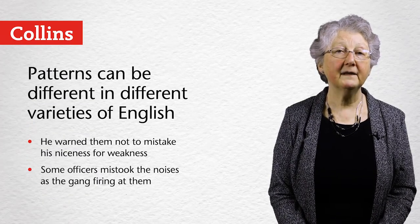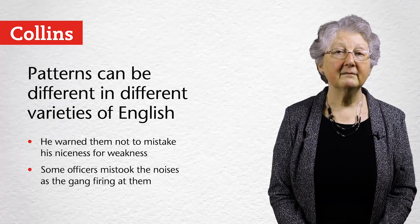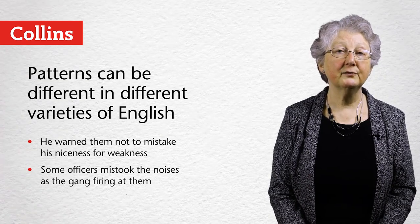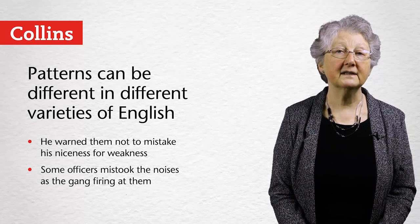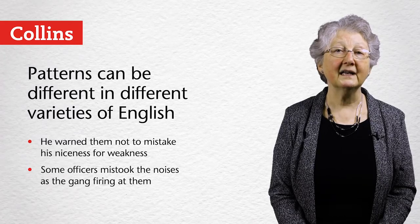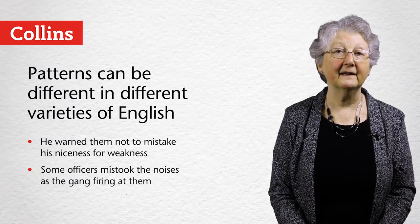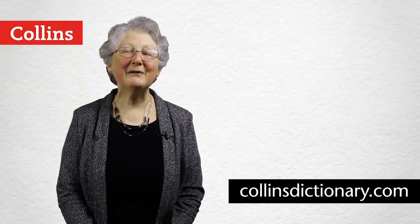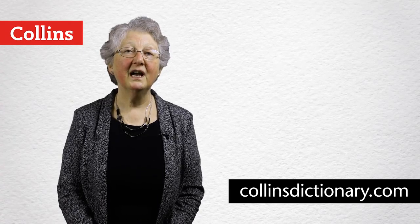We do find that patterns are different in different varieties of English. In British English, mistake is usually used with for — mistake niceness for weakness — but in many varieties of English it's used with as — mistook the noises as the gang firing at them. More information about grammar patterns is available on this channel, or go to the grammar section of collinsdictionary.com.